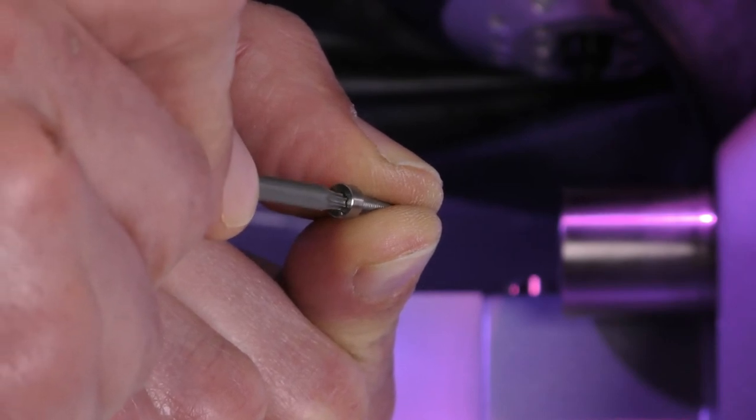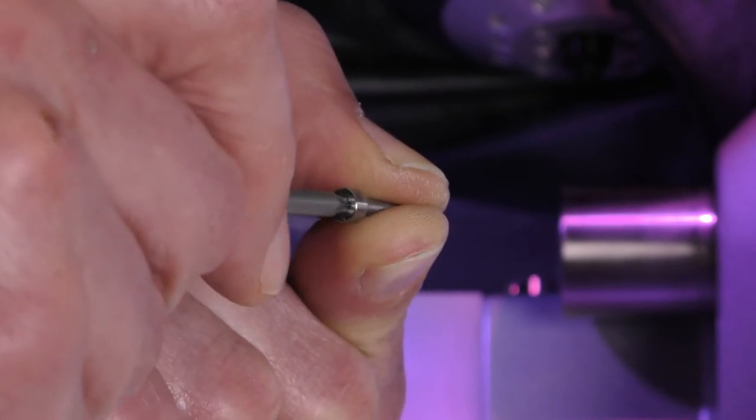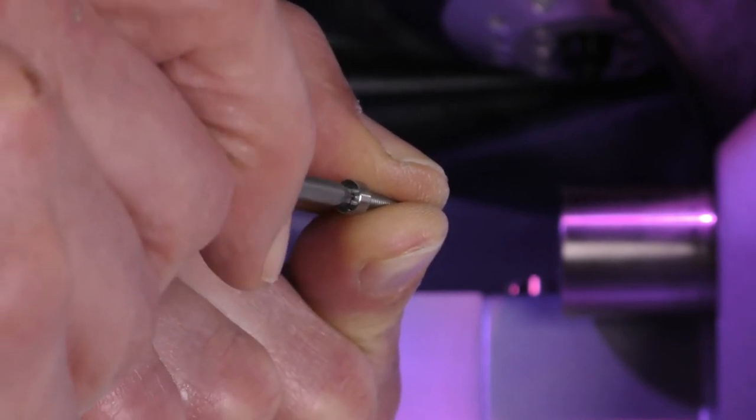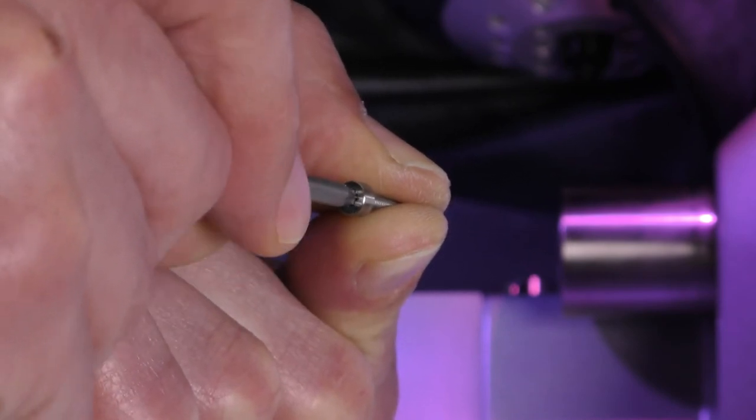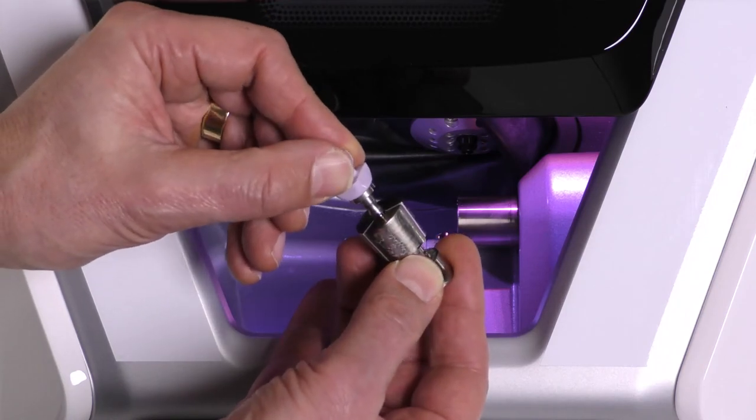Check whether the screw head is in good condition and the bit of the torque screwdriver fits tightly. Replace it with a spare screw if necessary. Remount a block on the collet chuck.